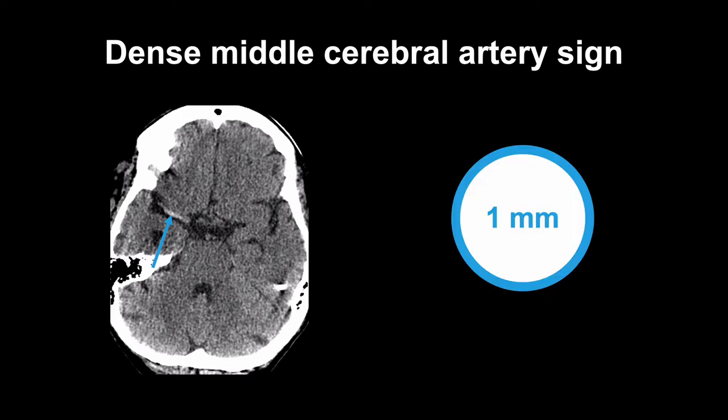This reconstruction clearly shows that the patient's right middle cerebral artery is unusually high in attenuation, and this is called the dense MCA sign. You'll have a better chance of making this diagnosis on CT when images are reconstructed at thin sections and displayed using a narrow window and level of about 40 Hounsfield units.